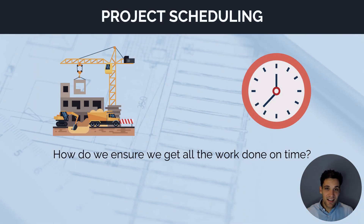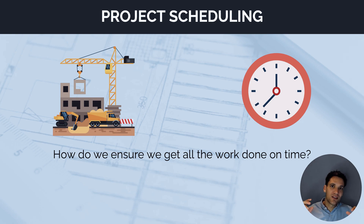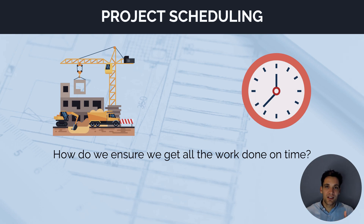The way I like to think about project scheduling in simpler terms is: we have a project, we have all this work that needs to get done — how do we ensure it gets done on time? What are the tools and processes we're going to use to make sure all the work is done within the required timeframe?